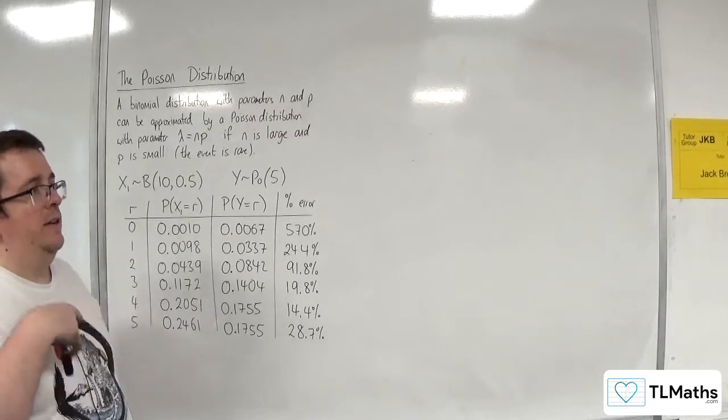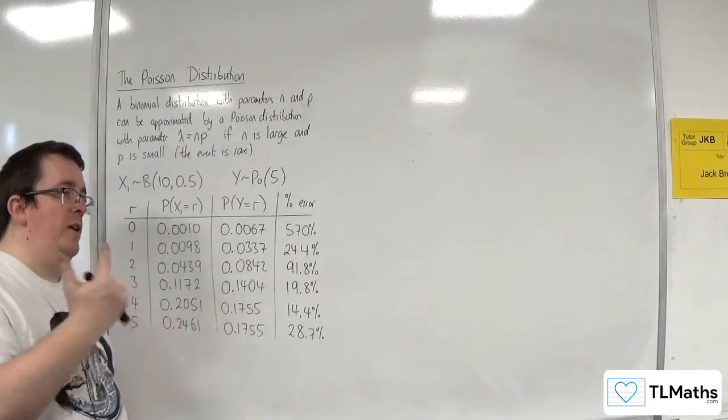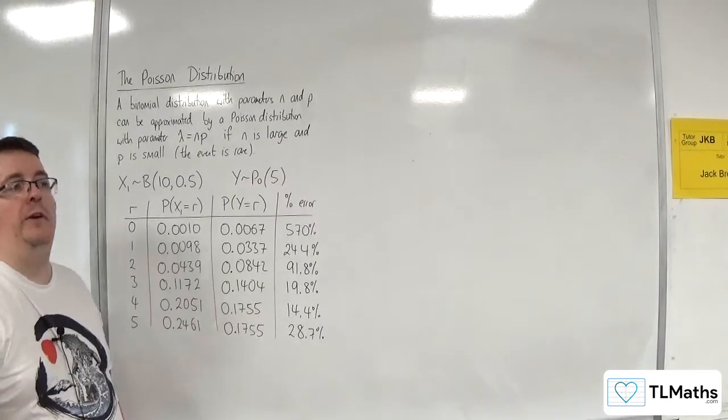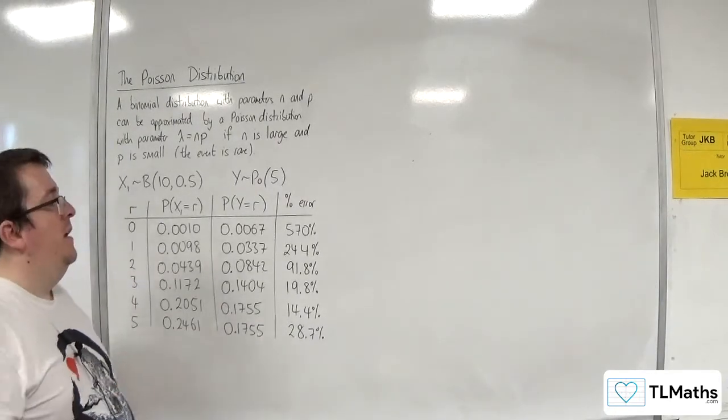So the first one, 570%, 244%, 91.8%, 19.8%, 14.4%, 28.7%. So not good at all. You can see that although we're approximating the binomial distribution with a Poisson, with n times p, it's not good.